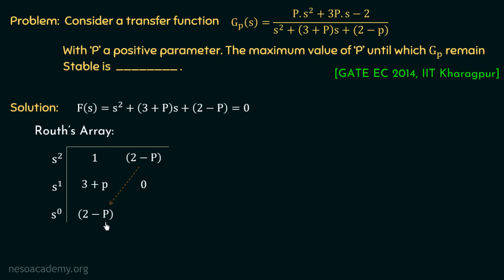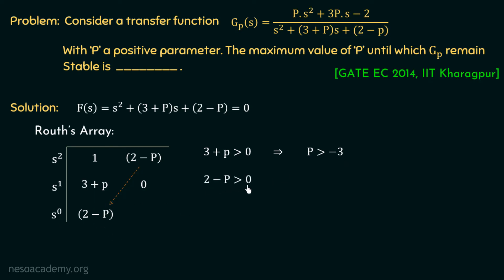Now we can find the range of P for system stability. For the system to be stable, all terms in the first column of the Routh array must have the same sign. Since the first term is +1 (positive), the other two terms must also be positive. From (3 + P) > 0, we get P > −3. From (2 − P) > 0, we get P < 2. Combining both inequalities, the range of P is from −3 to 2.